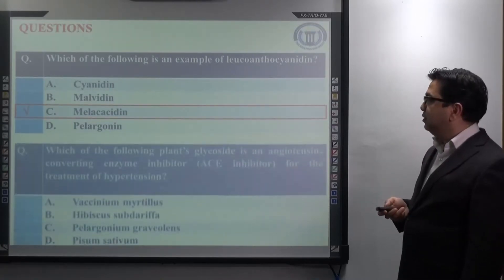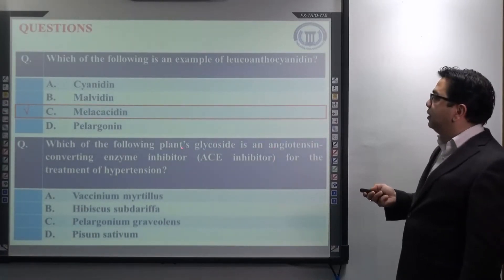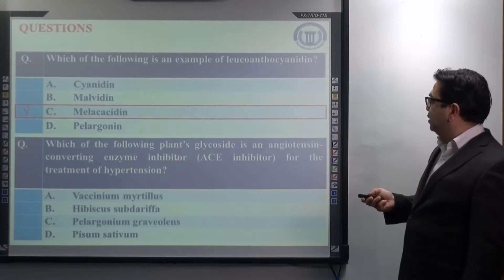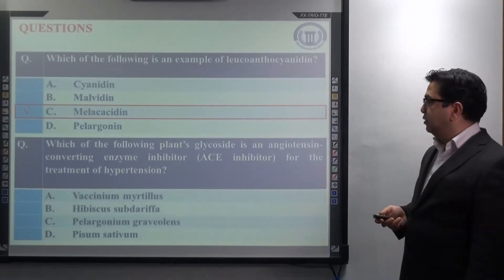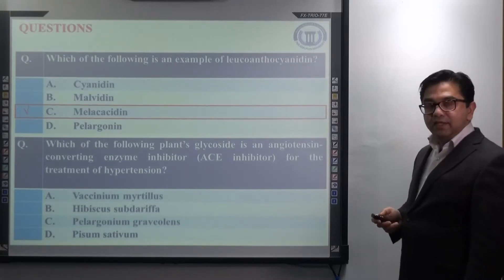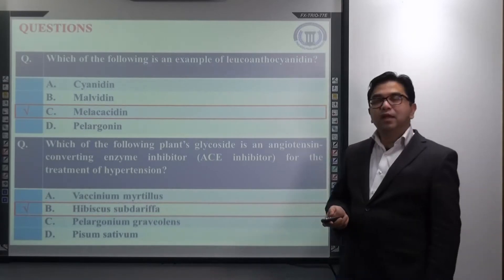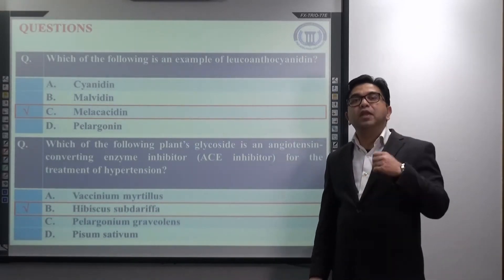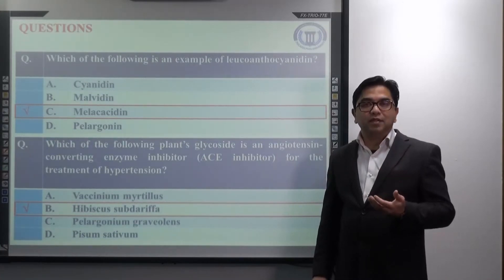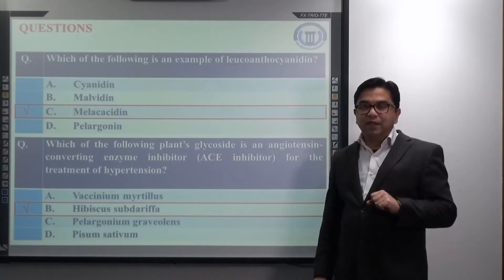Next question. Which of the following plant's glycoside is an angiotensin converting enzyme inhibitor for the treatment of hypertension? The correct answer is Hibiscus sabdariffa, option B. Can I ask you one more question from here? Which part of this plant is mainly used for the treatment of hypertension? If you remember, it is the calyx, a cup of the flowers, which is used.